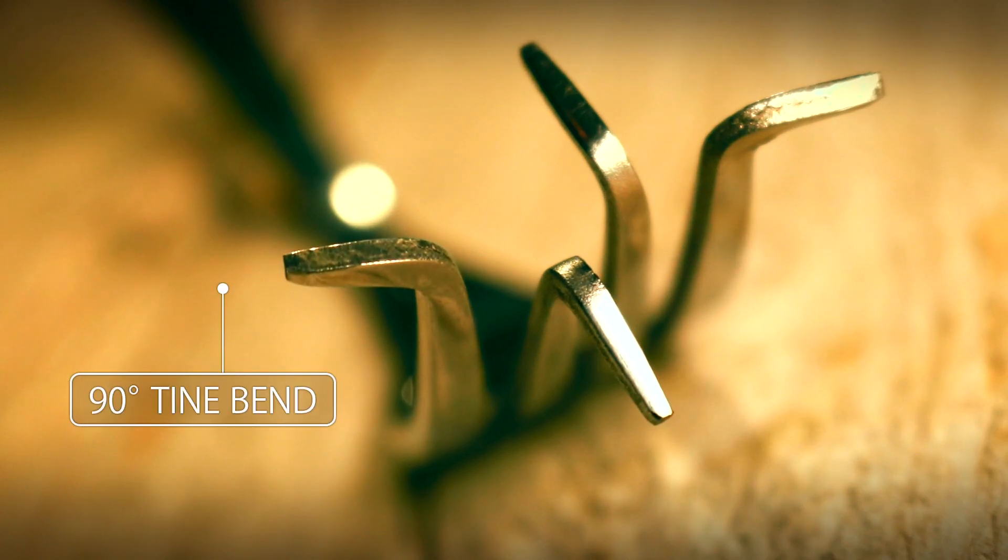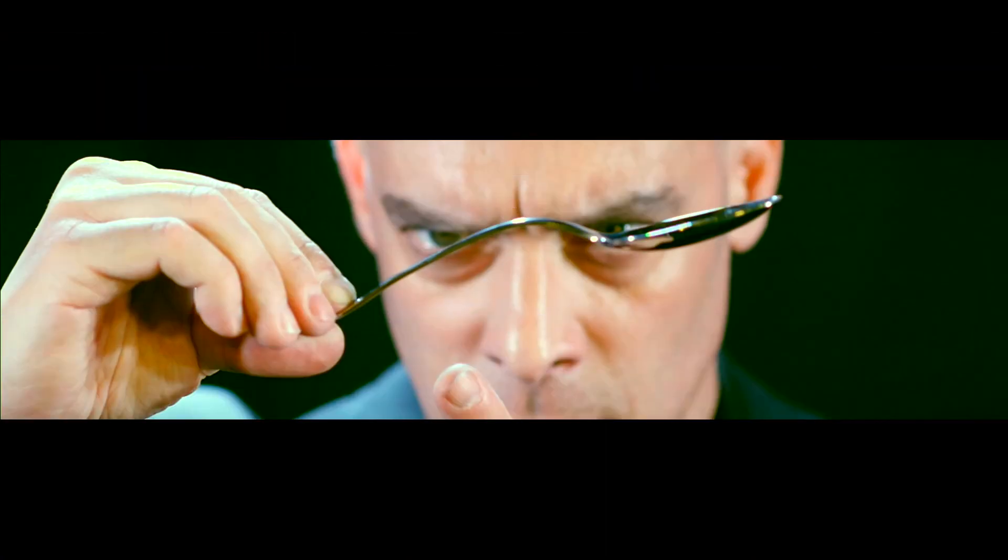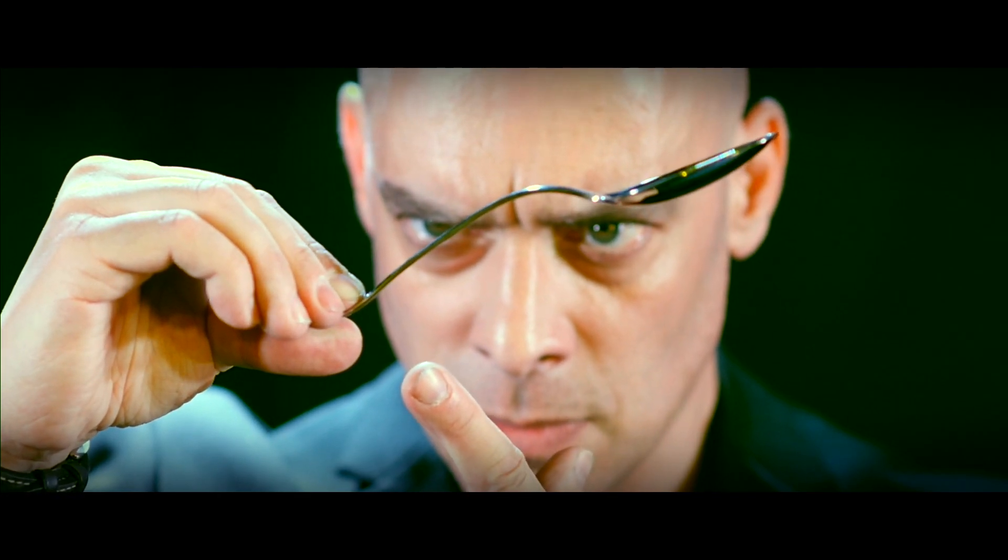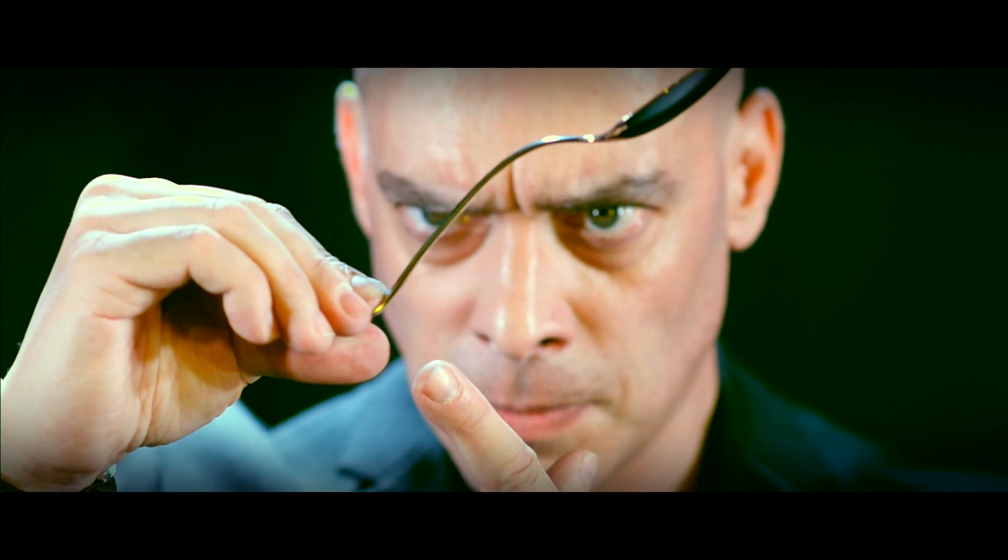You can also bend the tines to an impossible 90 degree angle, upwards, downwards or sideways, or bend the very end of the handle of both a spoon and a fork.